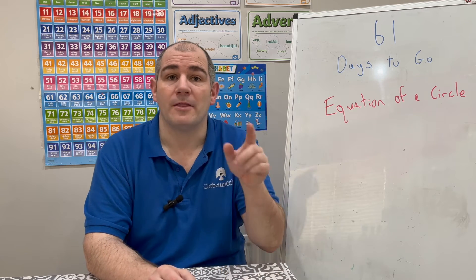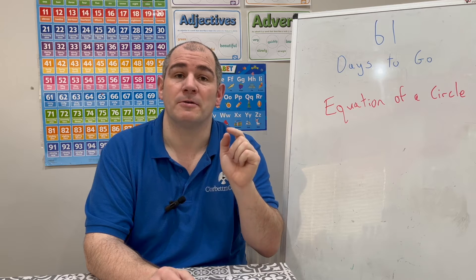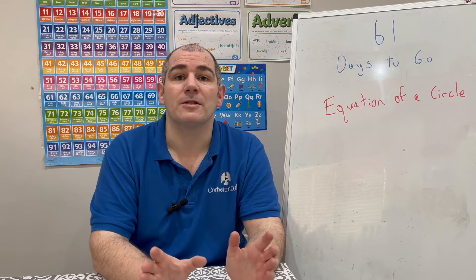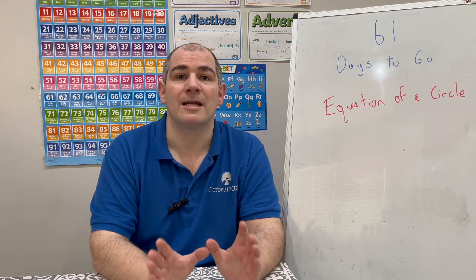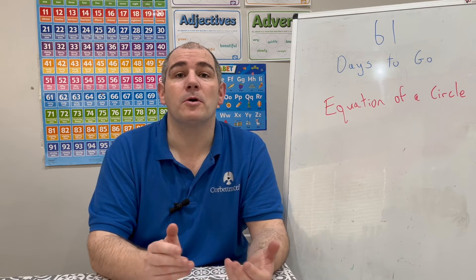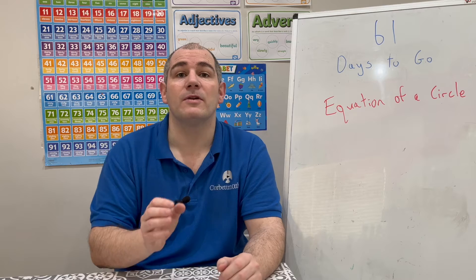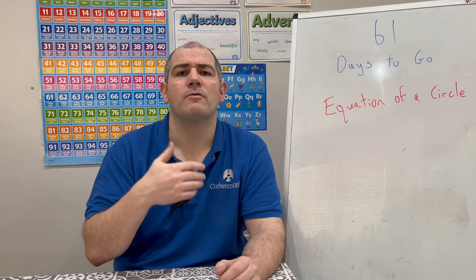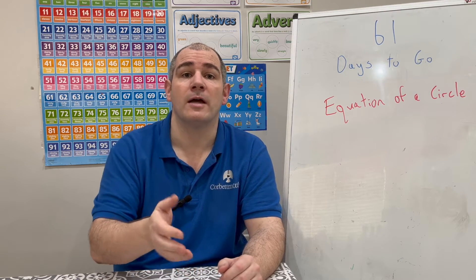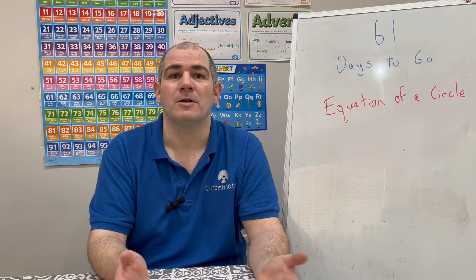If you've got a circle with centre at the origin — that's the point (0, 0) — and the radius of that circle is r, the equation of that circle will be x squared plus y squared equals r squared. That's an important equation to know, particularly for GCSE Higher. In this video I'm going to go through that equation, then go through some typical questions, and there'll be some questions for you to try.